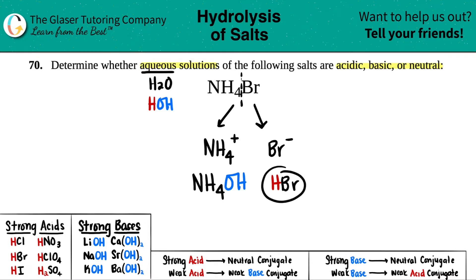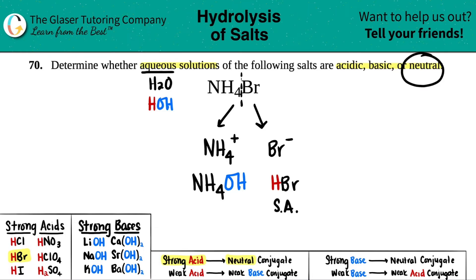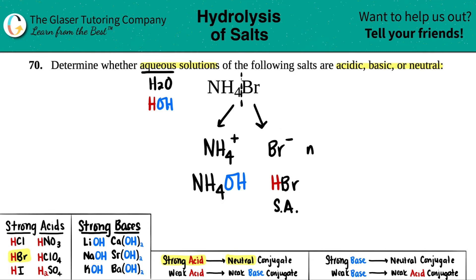Let's talk about HBr first. Is HBr one of your six strong acids or strong bases? Yes, it is — it's a strong acid. Any time you have a strong acid, the conjugate is so weak that it's classified as neutral. So in this case, since we have a strong acid HBr, the conjugate — which is Br minus — is neutral. Since it's neutral, I cancel it out because it has no bearing on acidic or basic properties.